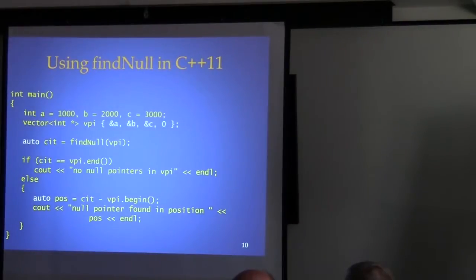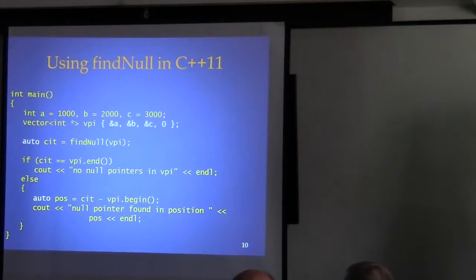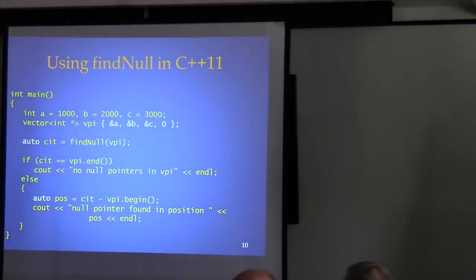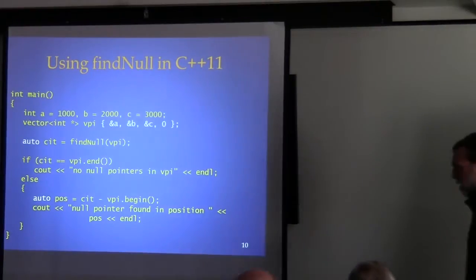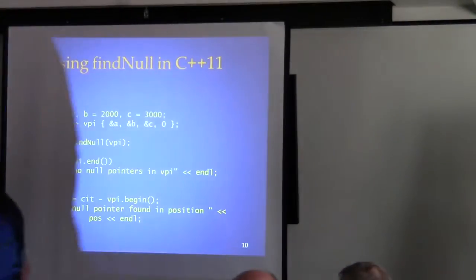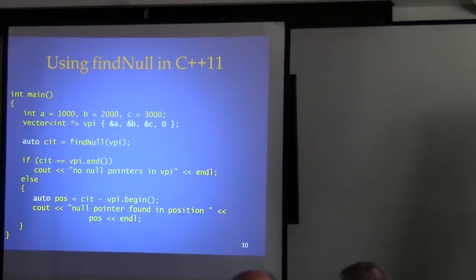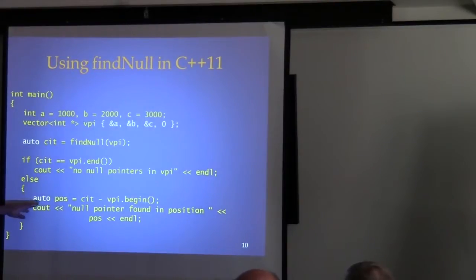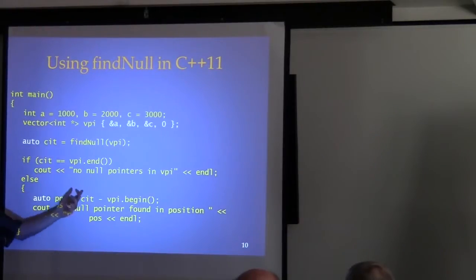Over the last several years there have been debates about whether auto is a good thing, since now you don't know what the type is reading the code — it hides information. The general consensus now is this is better. And where we previously had to declare the difference_type explicitly when subtracting two iterators, we can now just let the compiler figure it out with auto.